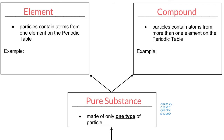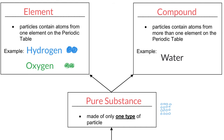If you look at the periodic table, you would see elements like hydrogen and oxygen. If I have a sample of hydrogen, it contains only hydrogen atoms. If I have a sample of oxygen, it contains only oxygen atoms. A compound, on the other hand — one example is water. The chemical formula for water is H2O, meaning water contains both hydrogen and oxygen. Water is a compound because it contains atoms from more than one element, hydrogen and oxygen, joined in one particle.